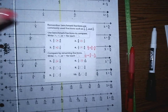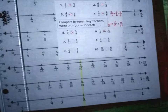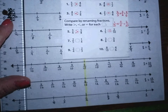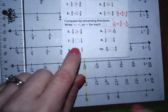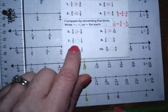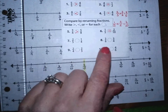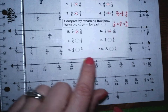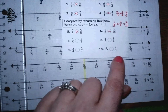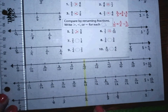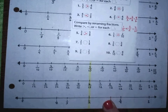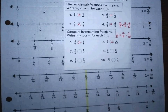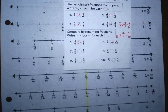Now I want you to go ahead and write down the next four. Try to compare two-fifths and one-fourth, three-sixths and three-fourths, two-fourths and two-thirds, and eight-tenths and four-sixths. You can use your number line to help you or your knowledge of the benchmark fractions. I hope that helped. Have a great afternoon.